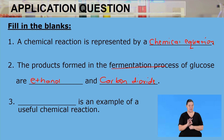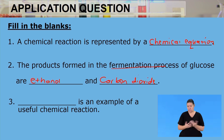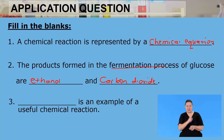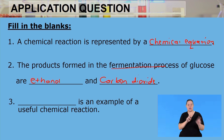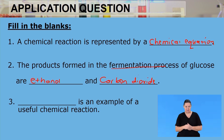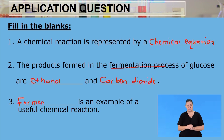Question three: fermentation is an example of a useful chemical reaction. It is used to produce ethanol, which is alcohol, and carbon dioxide. The souring of milk is also an example of a useful chemical reaction.